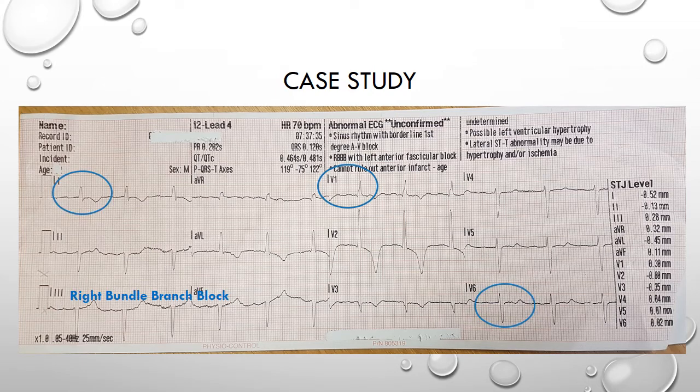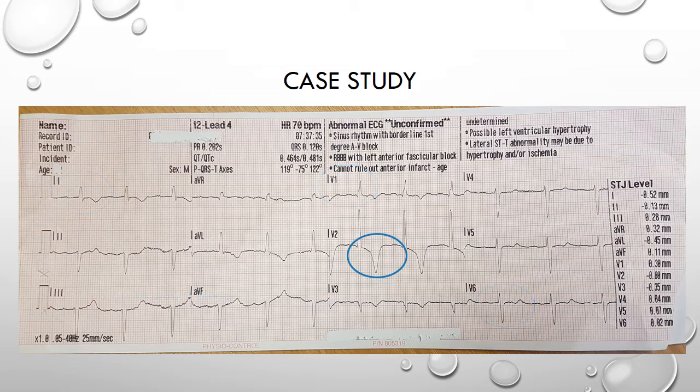However, none of this explains the dramatic and very obvious inverted and symmetric T wave in V2. So what could be causing it? Well, let's go back to the patient's presentation of having a stroke and consider cerebral T waves. Severe insult to the central nervous system can cause deep symmetric T wave inversions. It's usually found in more than one lead, but not always, and prolonged QT interval can also be present.